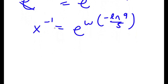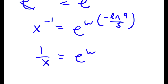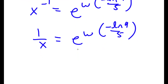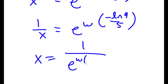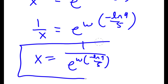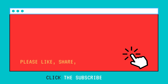Now x to the power of negative 1 is the same thing as 1 over x, so 1 over x equals e to the power of W of negative ln 9 over 5. Switching the places of these two, x is equal to 1 over e to the power of W of negative ln 9 over 5. So that is our value of x.